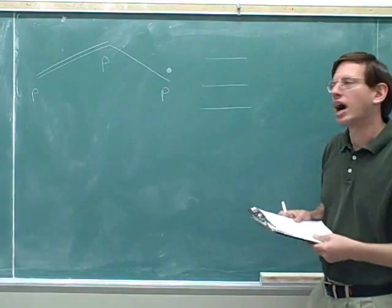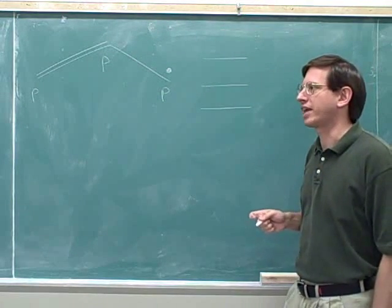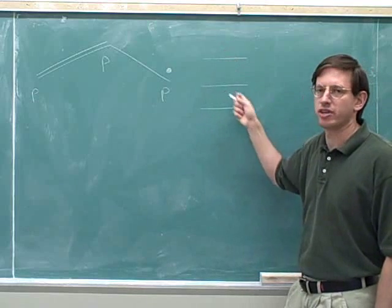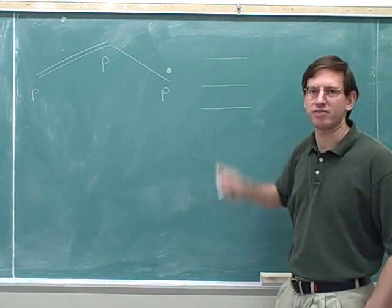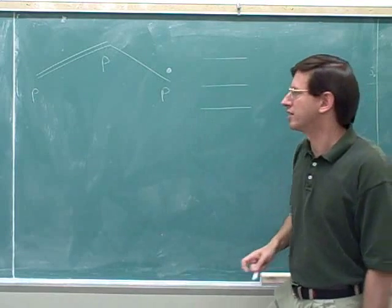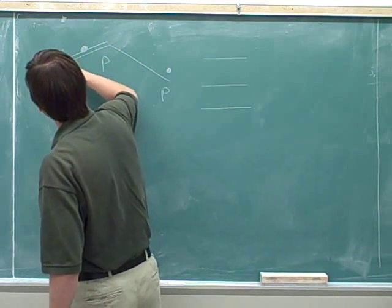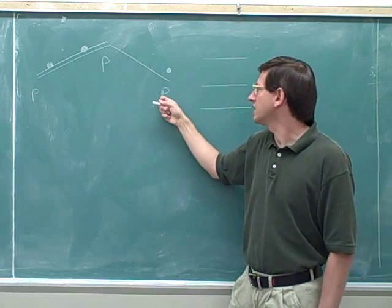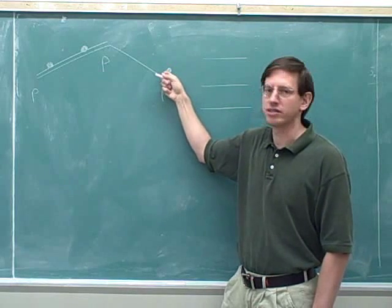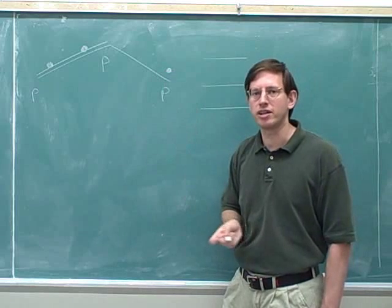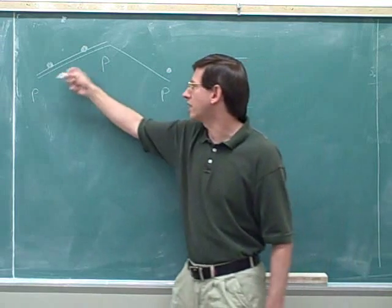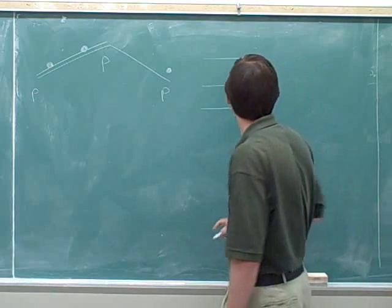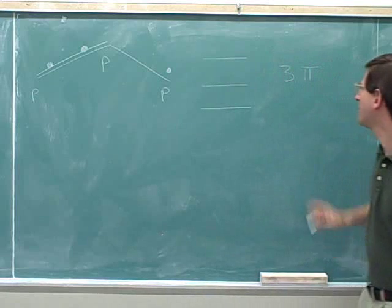We're not going to bother showing the orientation of the p orbitals, counting the nodes, or worrying about bonding and anti-bonding and non-bonding levels. We just need to know how many energy levels there are and where they are. How many pi electrons are there in this molecule? There are two pi electrons in the pi bond, and the radical carbon puts its unpaired electron in its p orbital, which also counts as a pi electron. So we have three pi electrons.